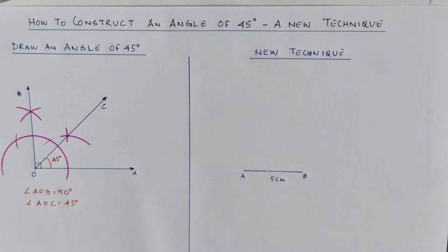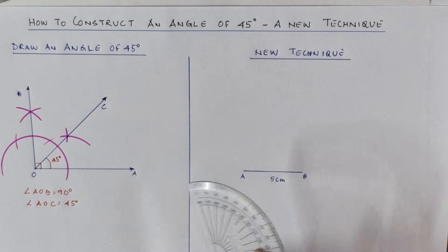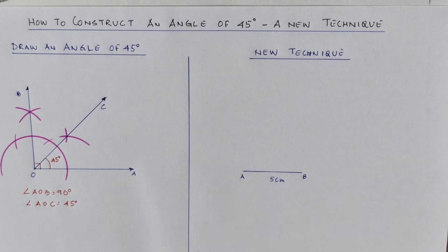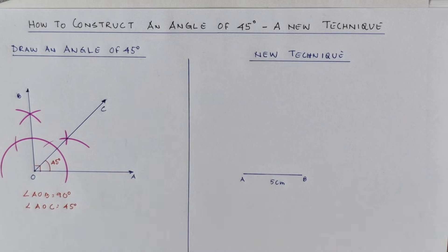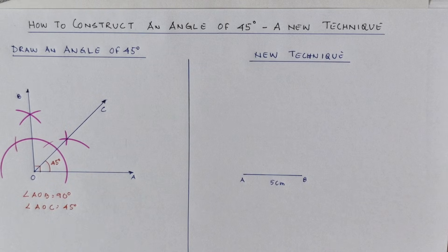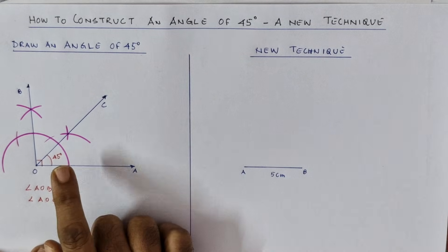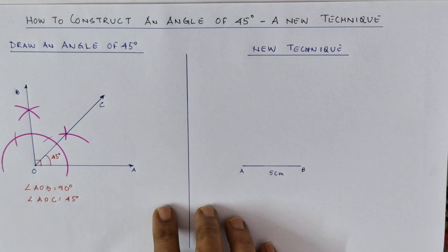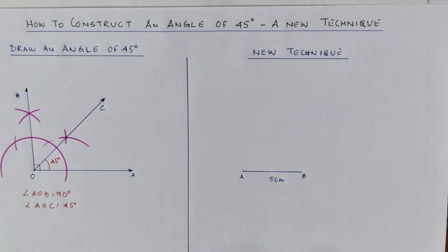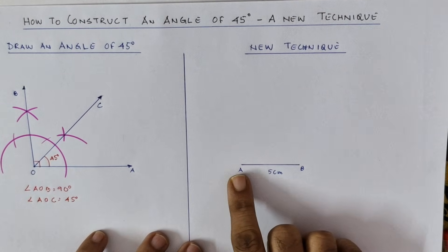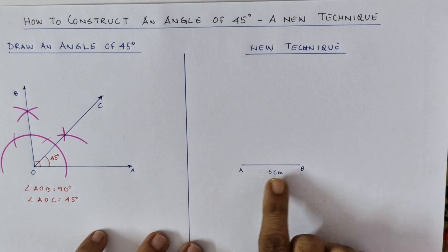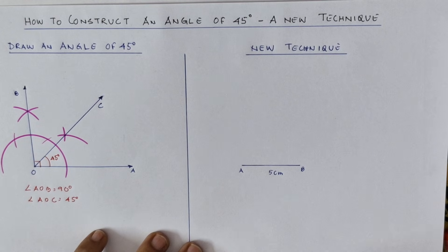Now let's come to the new technique — another way of drawing 45 degrees. However, if you are not given a choice, always use the previous process as it is the fastest and easiest way. In the new technique, I have already constructed a line segment AB of five centimeters.